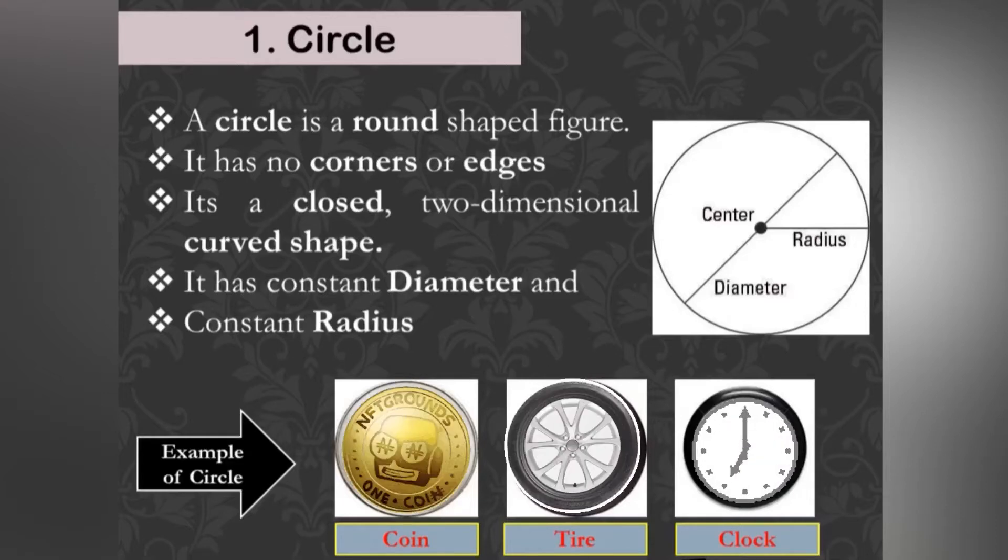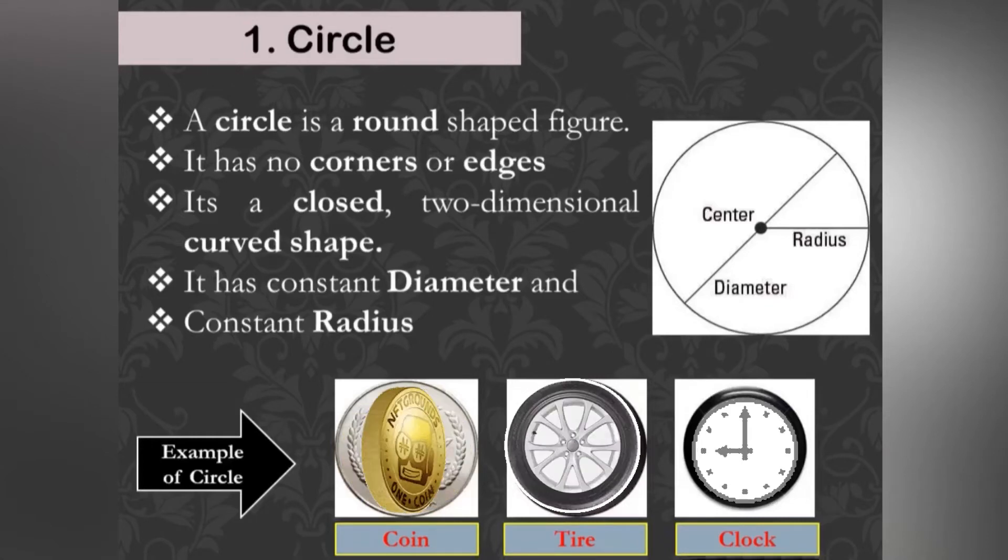Coin, tire of any vehicles, a clock can be the best examples of a circle.